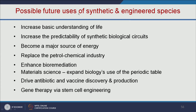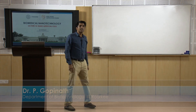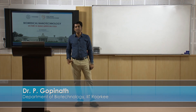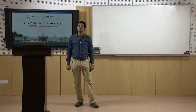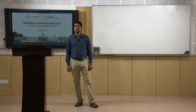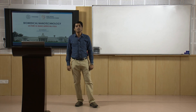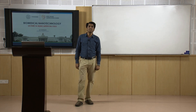Possible future uses of synthetic or engineered species include increasing basic understanding of life, improving predictability of synthetic biological circuits, replacing the petrochemical industry with biofuels, enhancing bioremediation, advancing material science, driving antibiotic and vaccine discovery, and enabling gene therapy via stem cell engineering. In summary, this lecture covered what artificial cells are, how to make enzyme-based artificial cells and artificial RBCs, various applications including cancer therapy and enzyme therapy, and what synthetic and minimal bacterial cells are and their applications. Thank you all for listening.